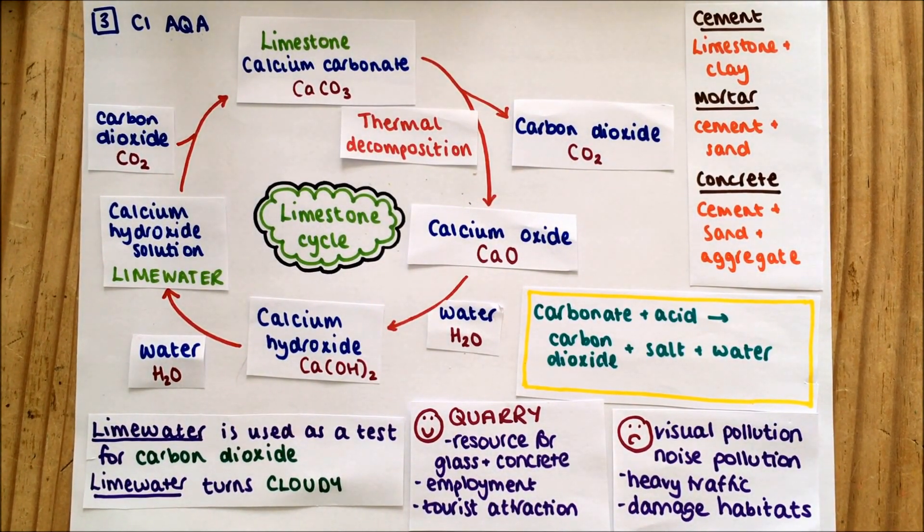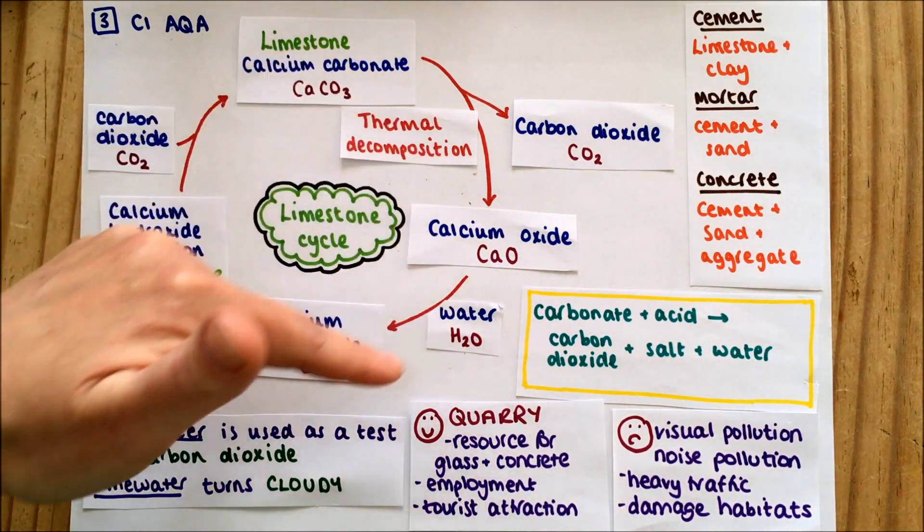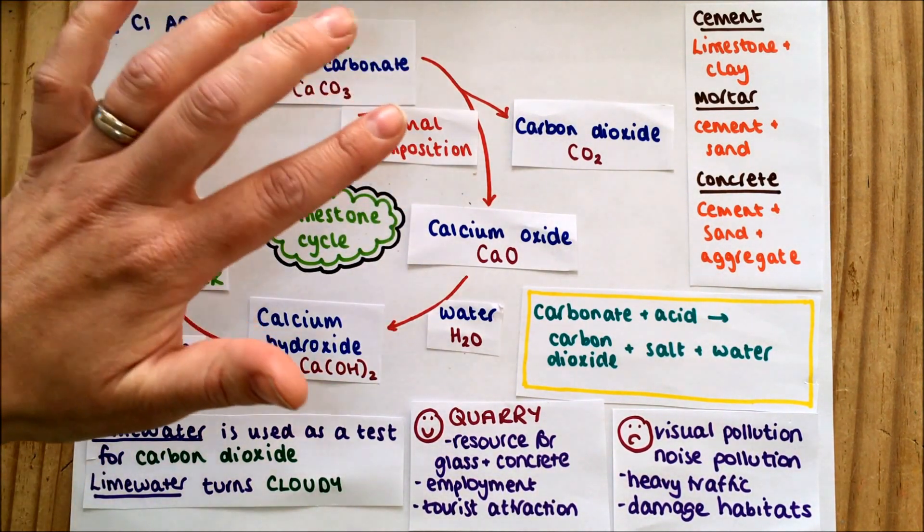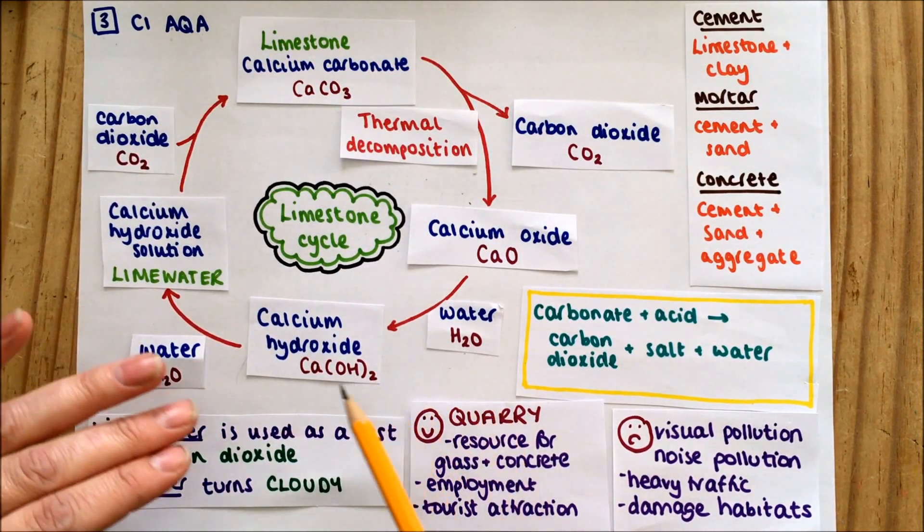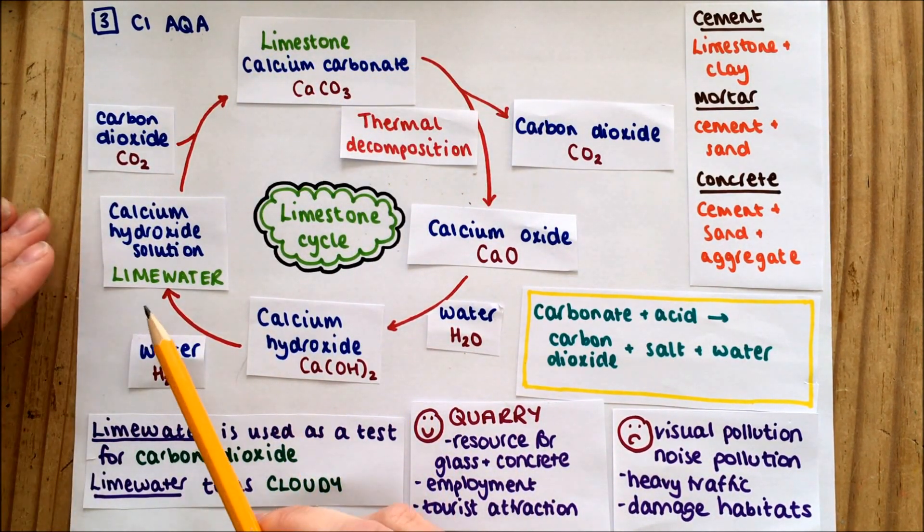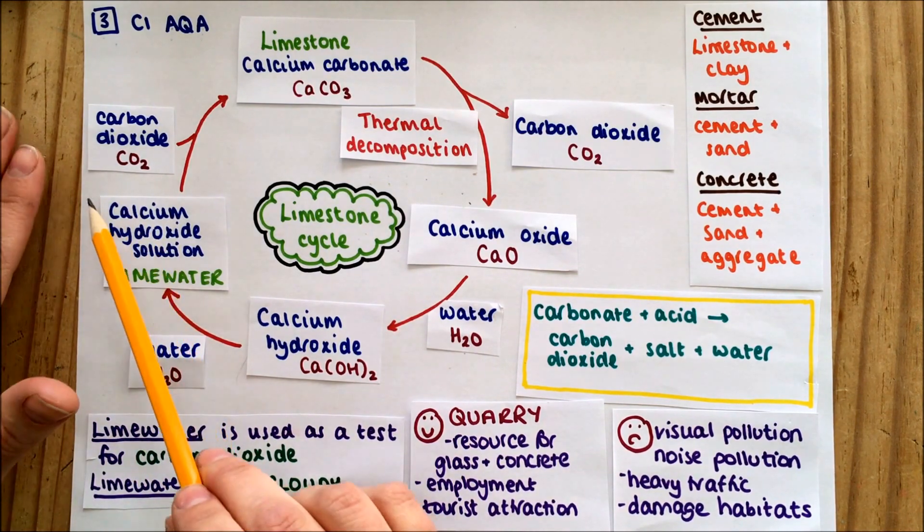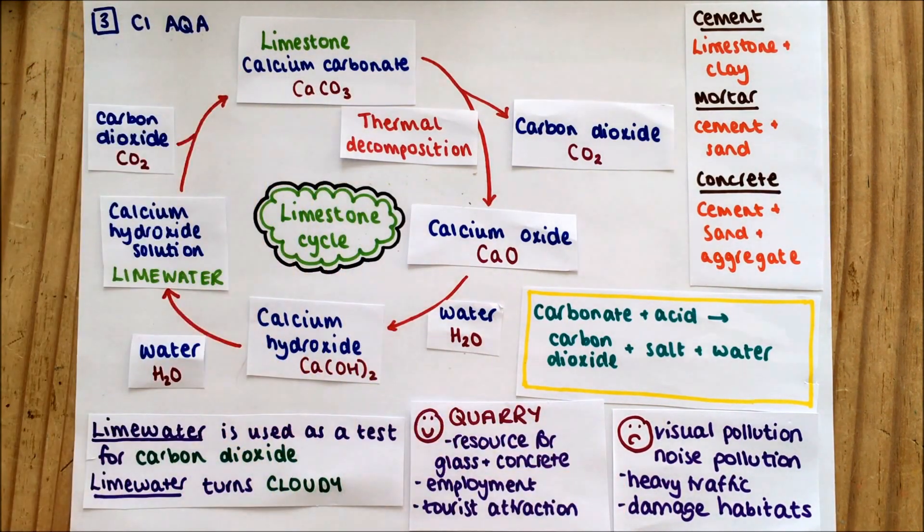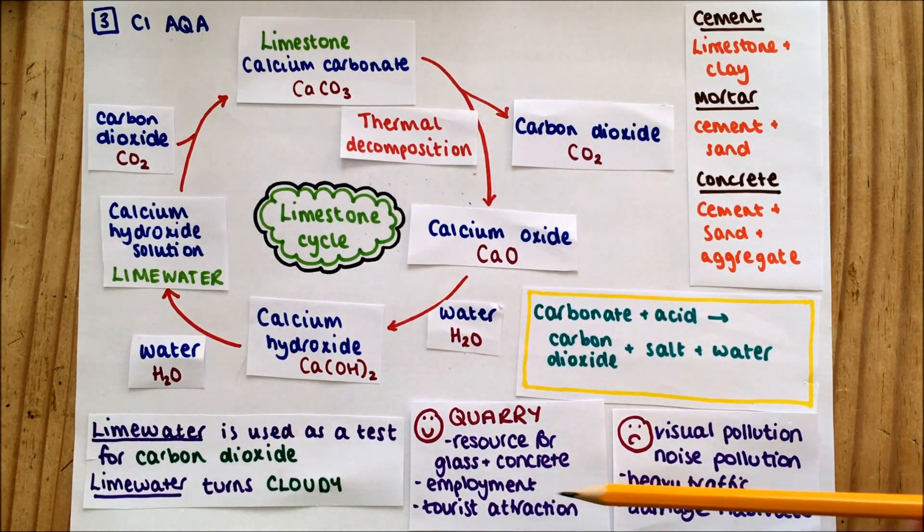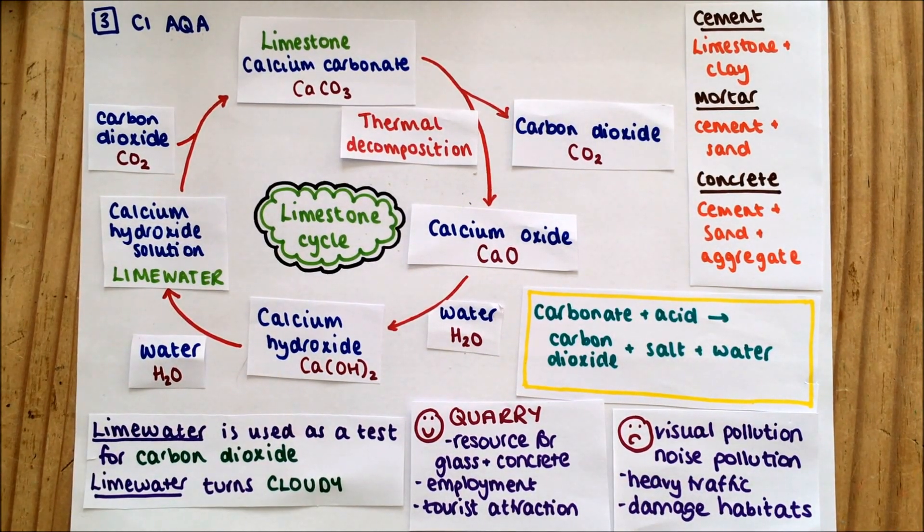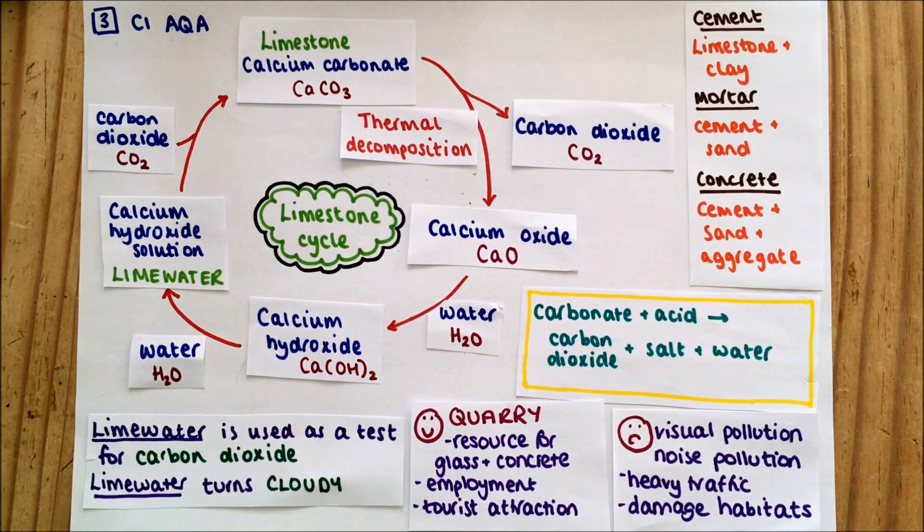So that's the limestone cycle. You need to know how it all works: limestone breaking down to carbon dioxide and calcium oxide, adding water making calcium hydroxide, adding more making lime water, and then adding carbon dioxide and making it back into limestone. That's the test for carbon dioxide, the things you can make with limestone, and then the fors and againsts of quarrying. Those are the key things from the limestone cycle in C1.